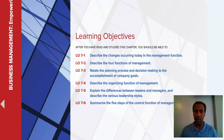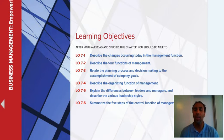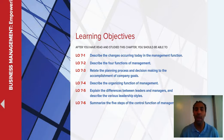Learning objectives: Describe the changes occurring today in the management functions. Describe the four functions of management, which we've already discussed a few times. Relate the planning process and decision-making to the accomplishment of company goals. Describe the organizing function of management. Explain the differences between leaders and managers. Describe the various leadership styles. And lastly, summarize the five steps of the control function of management.